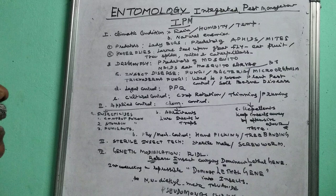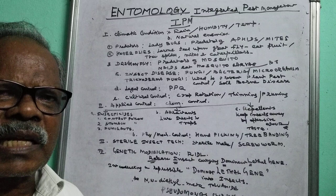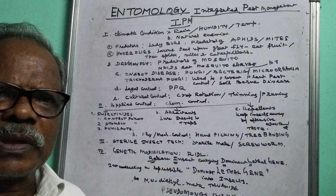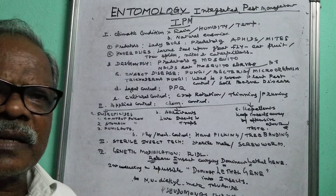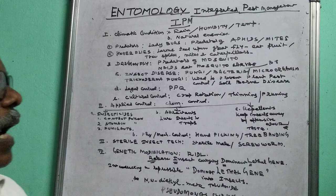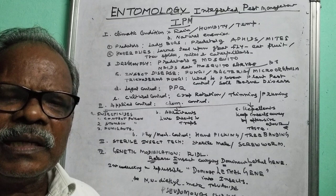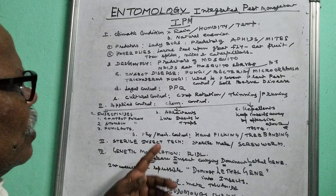Dragonfly is also a predator of mosquito. In the adult stage, the dragonfly devours smaller insects and also mosquitoes. It lays eggs in water and the nymph stage is formed in water — that is called naiads. The naiad devours mosquito larvae. So by introducing dragonfly nymphs in the water, they devour the mosquito larvae, and by that way we control the mosquito.